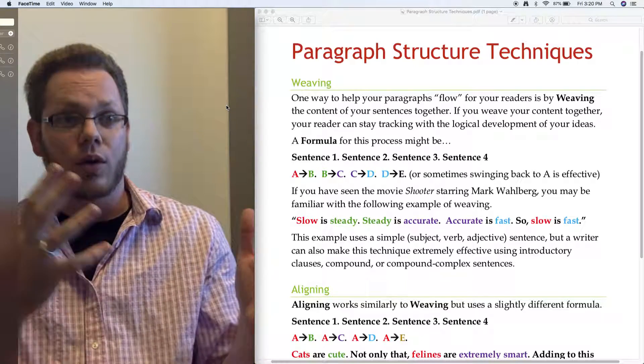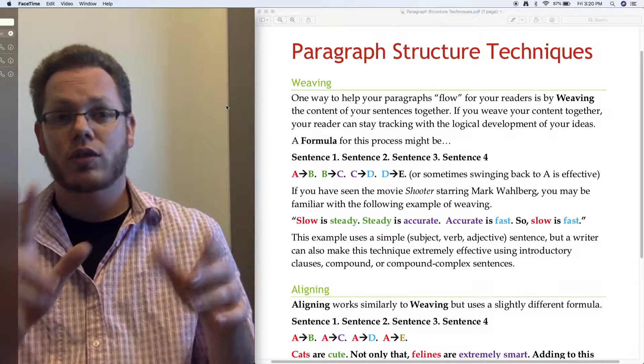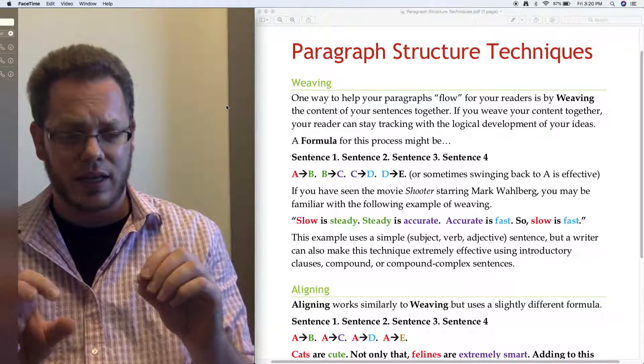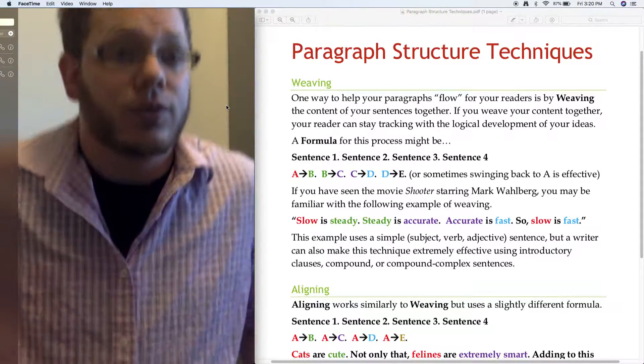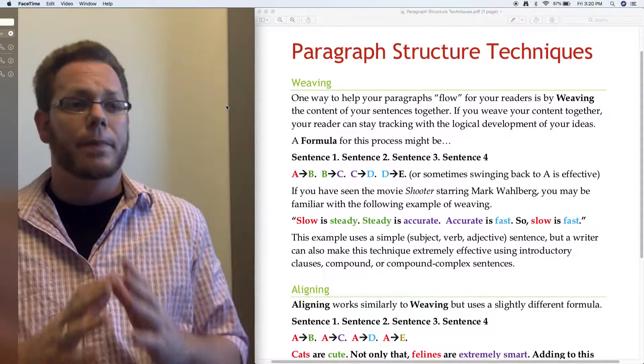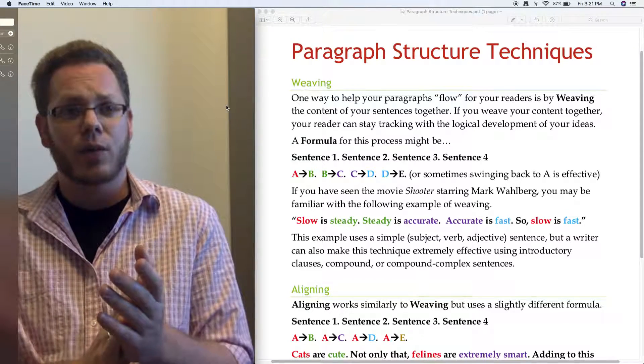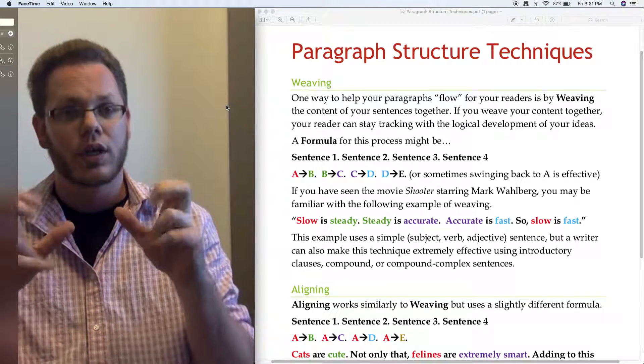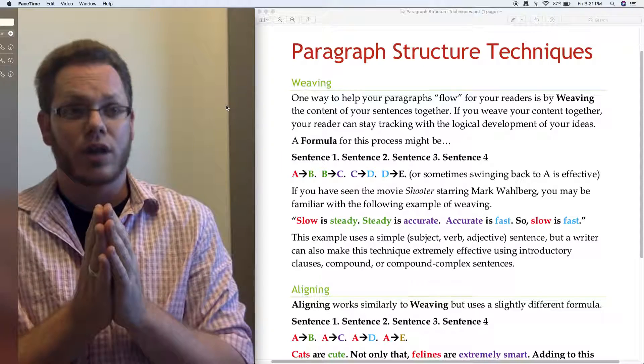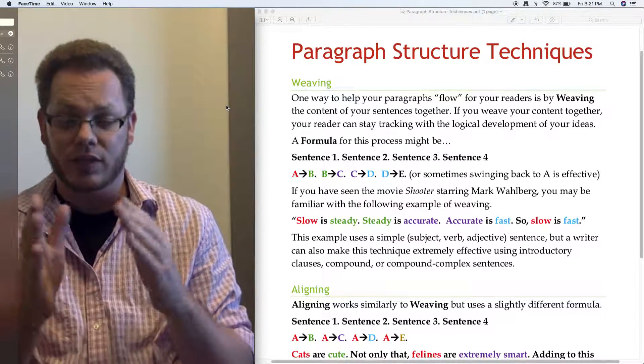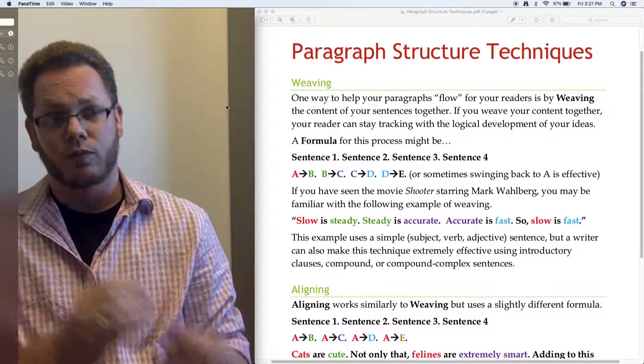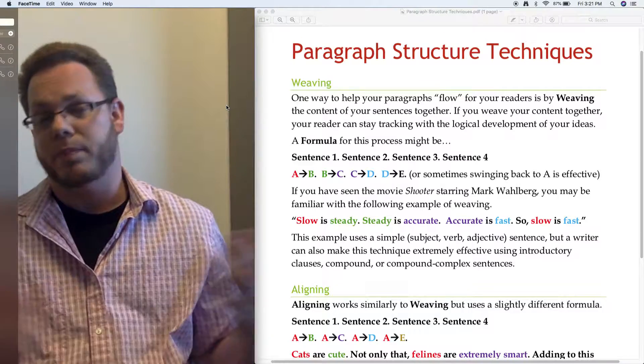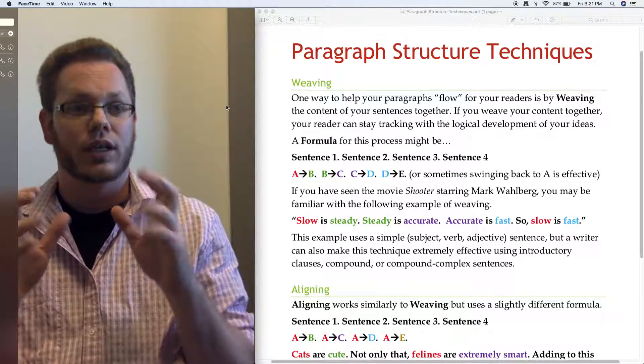So I've got two paragraph structuring techniques: weaving and aligning. This has to do with how we place the content items of our sentences or paragraphs. Both of these help the flow of your writing. Flow is a complex word. When we're talking this way, we're talking about sequence structuring and logical flow. We'll use it in quotation marks.